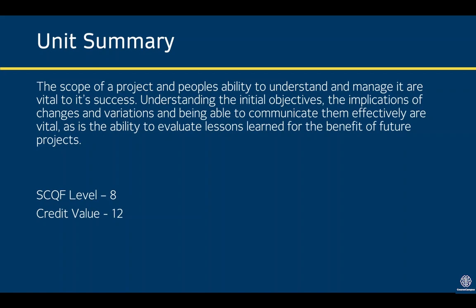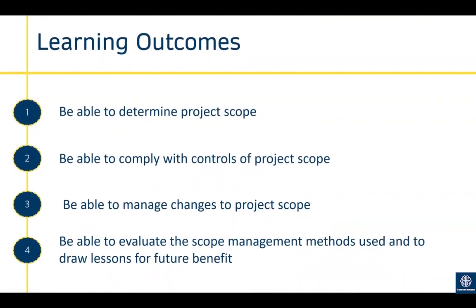This unit is at SCQF Level 8 and has 12 credit values. The unit has four learning outcomes. The first learning outcome is about being able to determine project scope — essentially producing a project plan for managing scope.